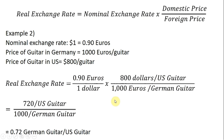The euros and the dollars cancel. 0.9 times 800 is 720; 1,000 times 1 is 1,000, giving you 720 over 1,000. Then, doing what we did in the last example, taking the reciprocal and multiplying through by the denominator and numerator — the denominator just equals 1, and multiplying through by the numerator gives you 0.72 German guitars per one U.S. guitar. Okay, I hope you found this video helpful.